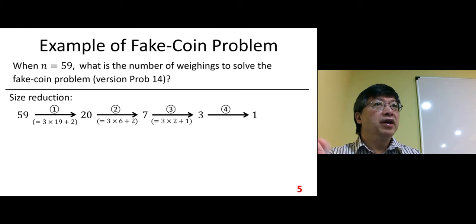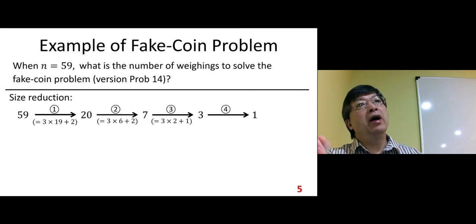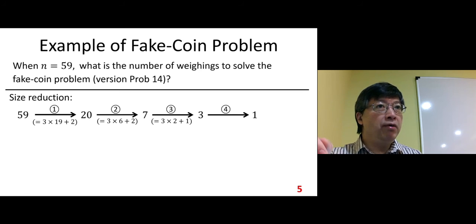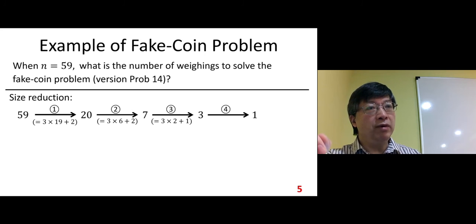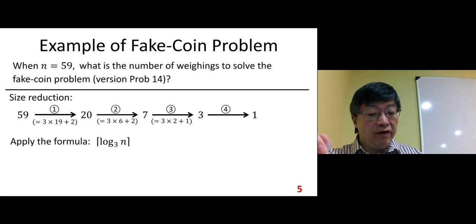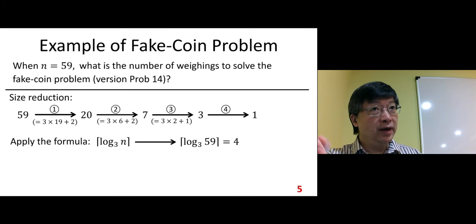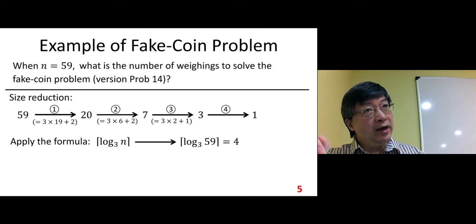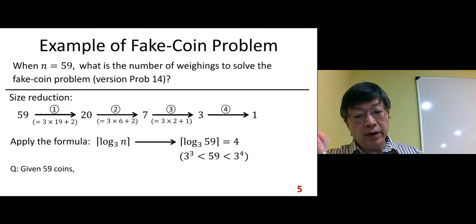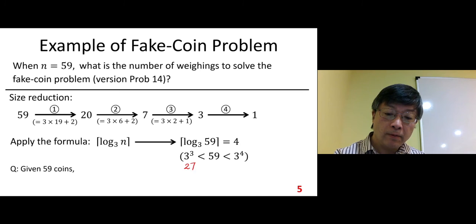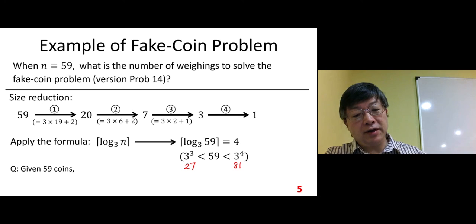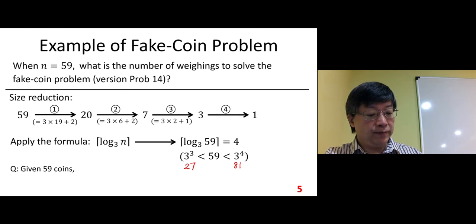There is also a faster method: apply the formula ceiling of log base 3 of n directly. Since 59 is between 3^3 = 27 and 3^4 = 81, taking the ceiling gives 4. Both methods confirm the answer is 4 weighings.